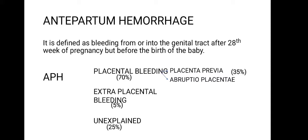So if an antenatal mother complains of vaginal bleeding, the first thing to note is her gestation week. If she is at 30 weeks, this can be considered antepartum hemorrhage. By definition, it is defined as bleeding from or into the genital tract after the 20th week of pregnancy but before the birth of the baby.